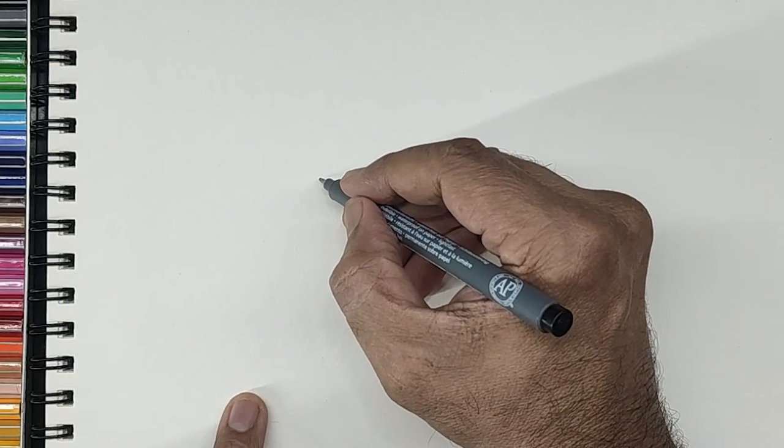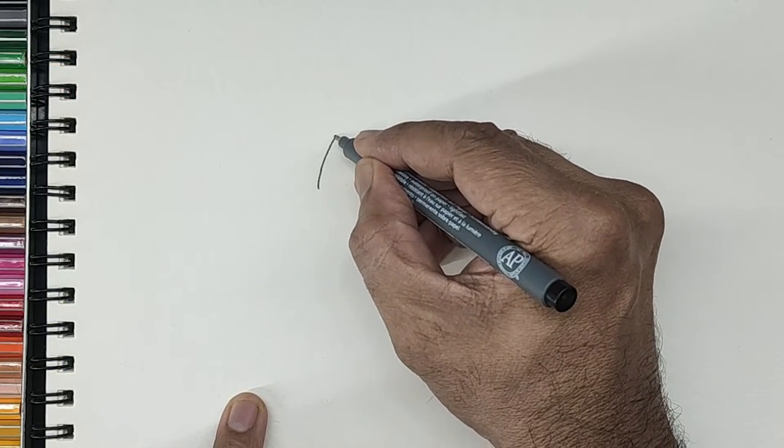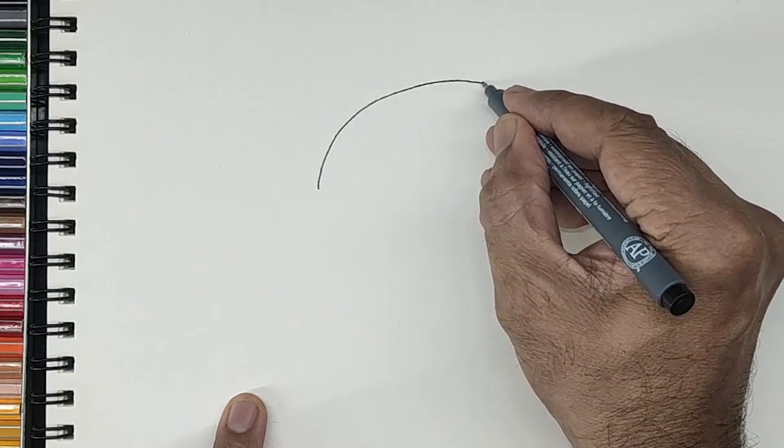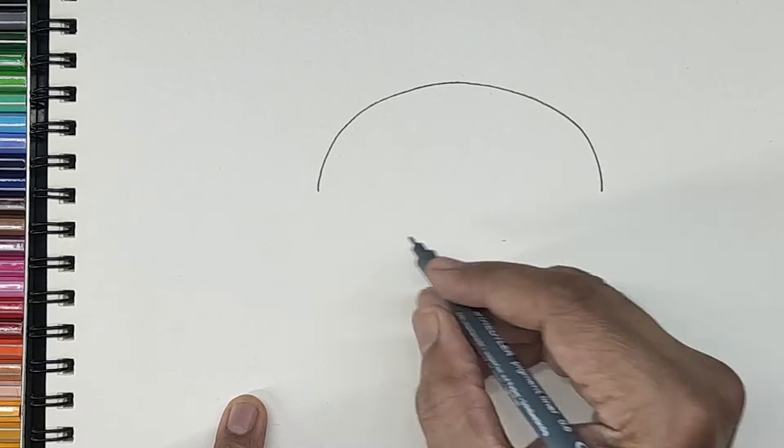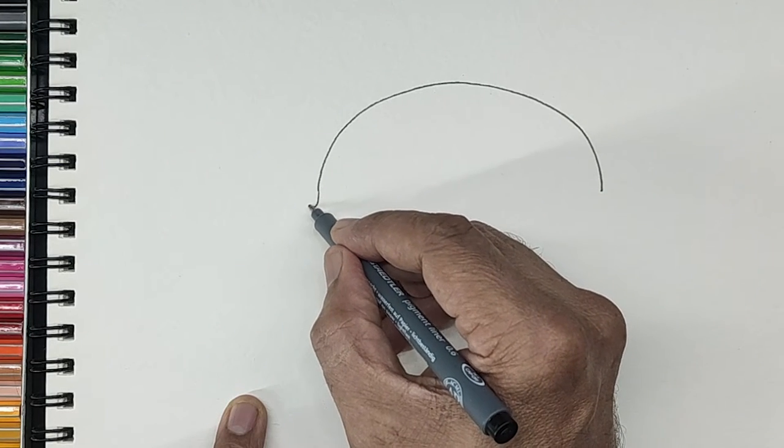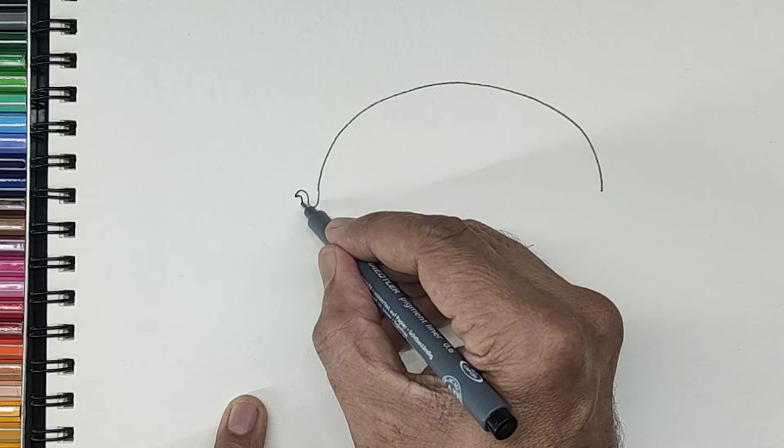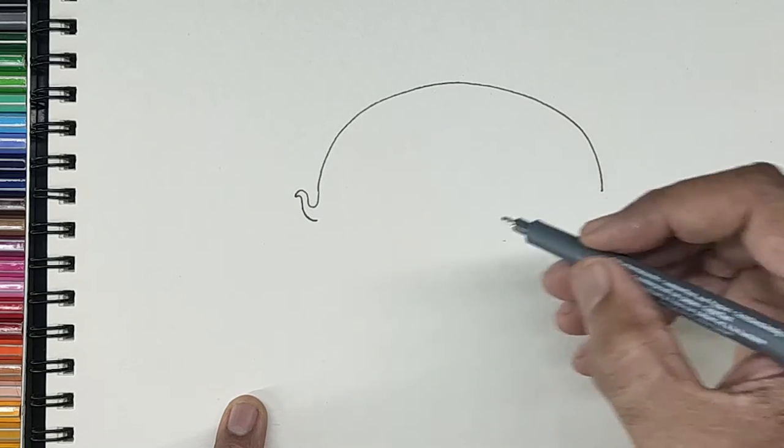Let us start with a large dome-like structure which will form the upper part of the body. A small trunk. Let us draw the lower body.